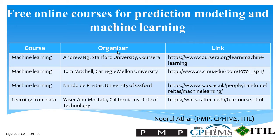Course, Organizer, and link. First course name: Machine Learning, organizer Andrew Ng, Stanford University, Coursera — and this is the link. Second course: Machine Learning, Tom Mitchell, Carnegie Mellon University — and this is the link.